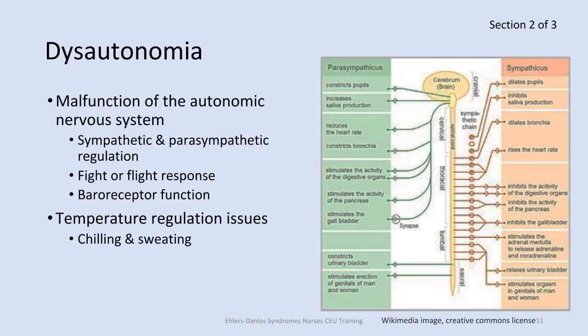EDS patients may experience symptoms related to dysautonomia, which is a malfunction of the autonomic nervous system. The nervous system is divided into the central and peripheral systems. The peripheral system is subdivided into autonomic and somatic. The autonomic nervous system is further divided into the sympathetic and parasympathetic. It's the autonomic nervous system that is affected in dysautonomia, so your sympathetic and parasympathetic — which many people know as the fight-or-flight or rest-and-digest systems — dysfunction. You may have a sympathetic response when you don't need one.